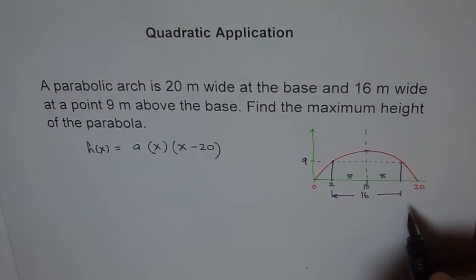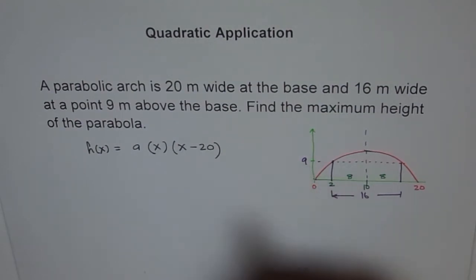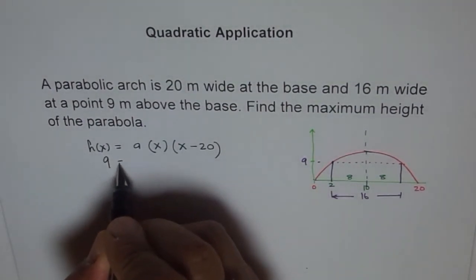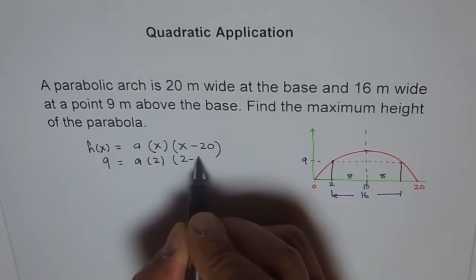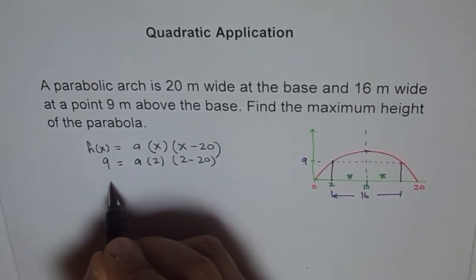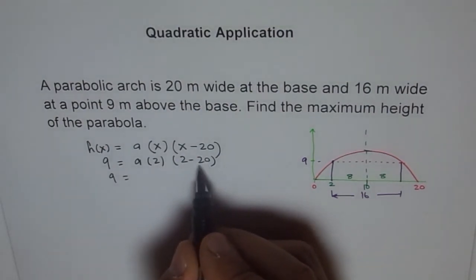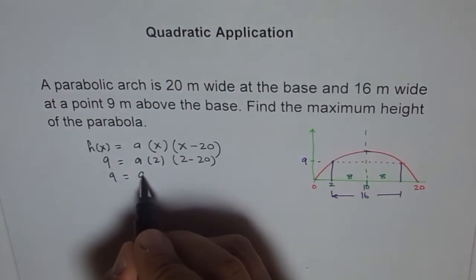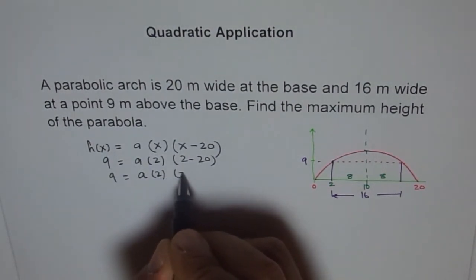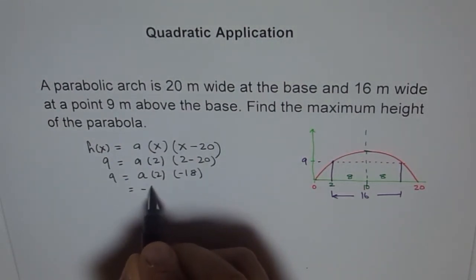Now, we are given this point and that point should help us to find the value of a. So at 2 the value is 9. So write 9 equals a times 2 times 2 minus 20. It is 18 minus 20. So it is 9 equals 2 times 2 minus 20 is 18 minus, right? So 18 minus, let me write it. a, 2 times minus 18.